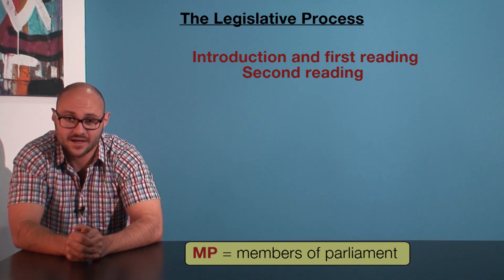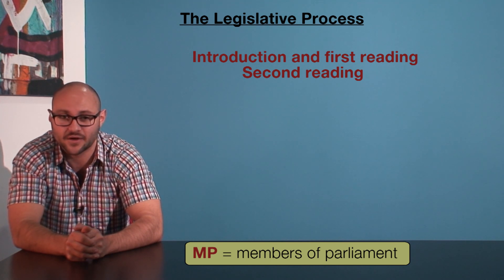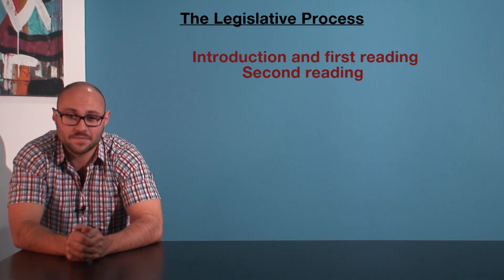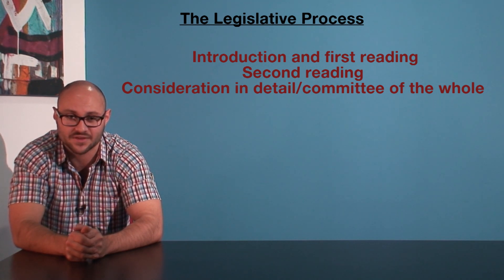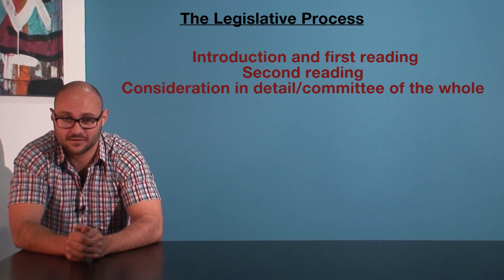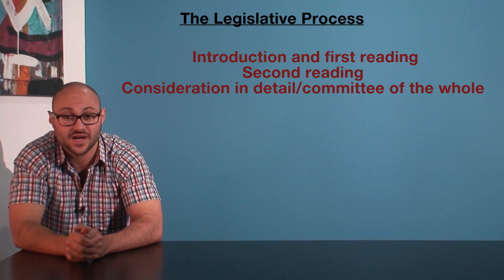Next, there's the second reading. Here the minister responsible for the bill gives a speech to Parliament outlining the bill's purpose. The MPs have a pretty extensive debate and then vote for or against the bill's continuation. If a particularly controversial bill passes the second reading stage, the Speaker of the House will step down and the House will examine the bill in a lot of detail, making amendments to it as they go along. In the lower house, this is known as the consideration in detail stage. In the upper house, it's the committee of the whole stage.